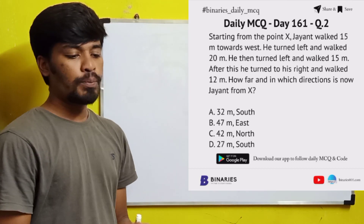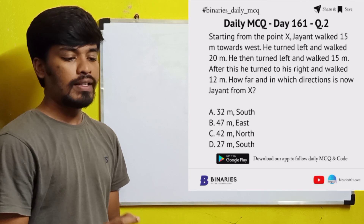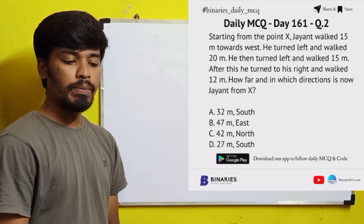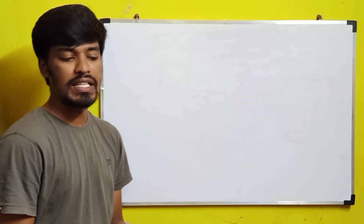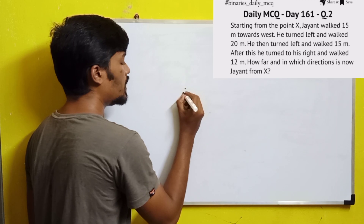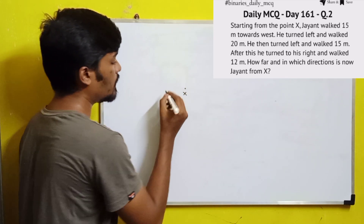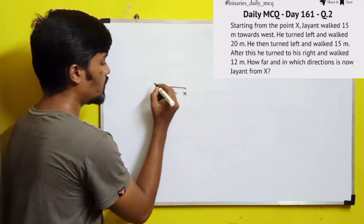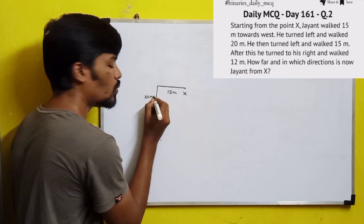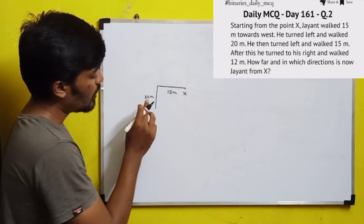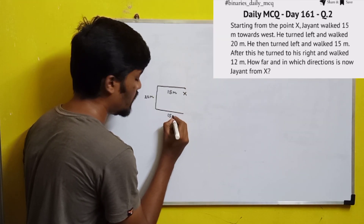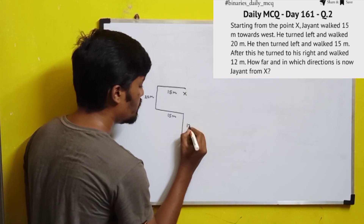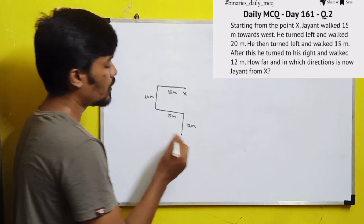The second question is: Starting from point X, Giant walked 15 meters towards west. He then turned left and walked 20 meters. He then turned left and walked 15 meters. After this he turned to his right and walked 12 meters. How far and in which direction is Giant from X? Starting from point X — assume this is point X. Giant walked 15 meters towards west. He then turned left, which is towards the south, and walked 20 meters. Then turned left and walked 15 meters. After that he turned right and walked 12 meters.